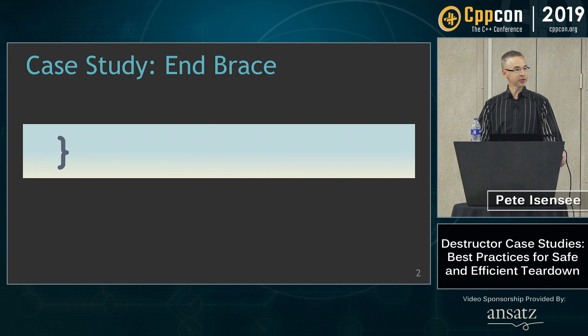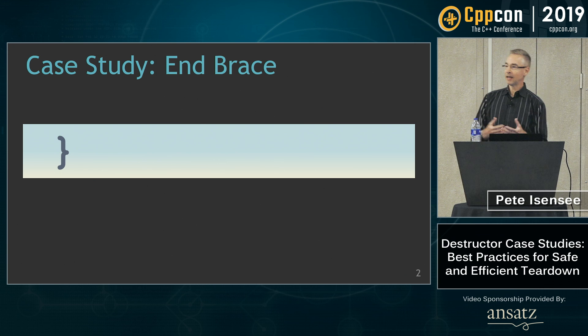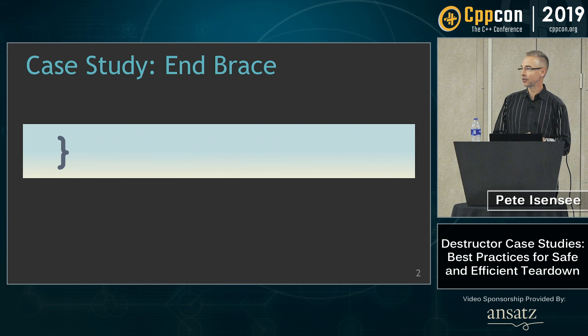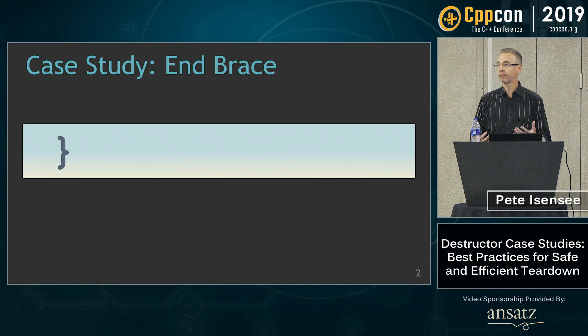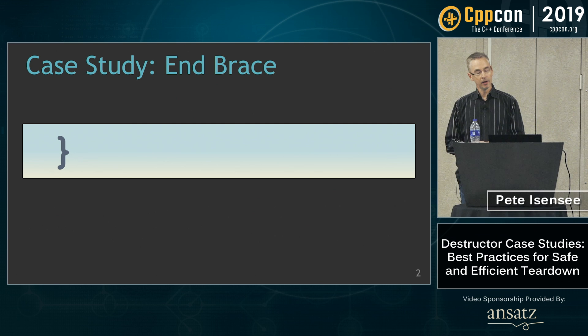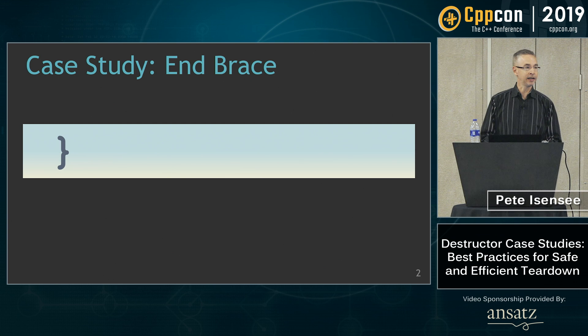Files could be getting closed, memory could be freed, buffers could be flushed, locks could be released, sockets could be closed — all of the above and more. Who knows what's happening here? That's the exciting and scary thing about this line of code. A lot could be happening here, but it's hidden from us as software engineers. And because it's hidden, we don't realize how often destructors are actually getting called.